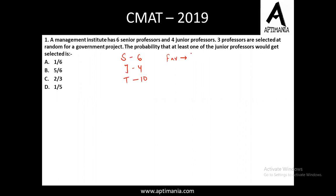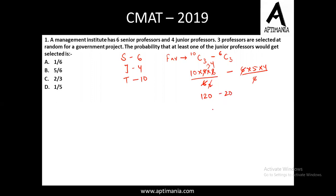To calculate the favorable cases where at least one junior professor is selected, we calculate total cases minus the cases when only senior professors are selected. Total cases: 10C3. Cases with only senior professors: 6C3. On solving, 10C3 = (10×9×8)/6 = 120, and 6C3 = (6×5×4)/6 = 20. So favorable cases = 120 − 20 = 100.